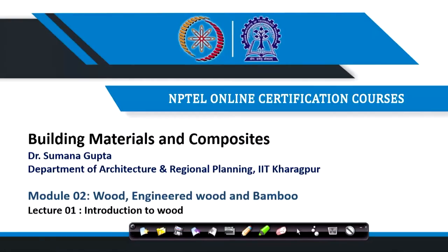Welcome again to module 2. This module covers another naturally occurring material — wood. You all know wood; we get it from trees. Along with it, we see engineered wood and bamboo. From wood, a lot of wood-like materials or similar kind of materials are made as byproducts from the wood industry. Bamboo, which has been used as a support material and structural material, is also being used as a building material nowadays.